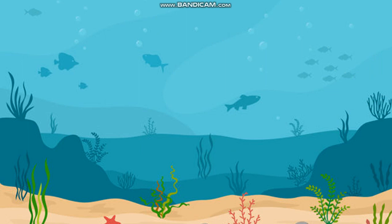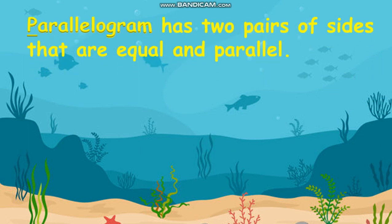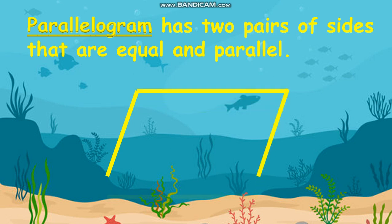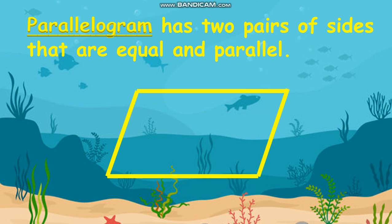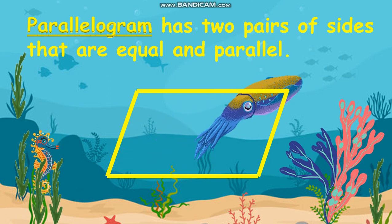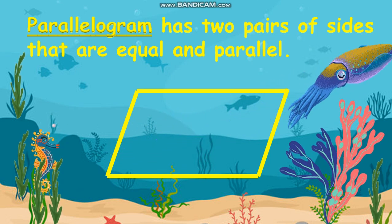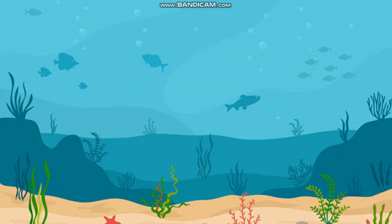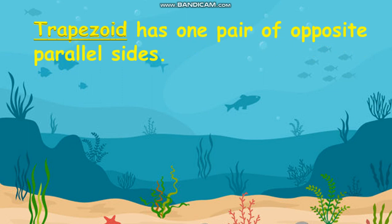Another kind of quadrilateral is a parallelogram. It has two pairs of sides that are equal and parallel. And the last one is the trapezoid, which has one pair of opposite parallel sides.